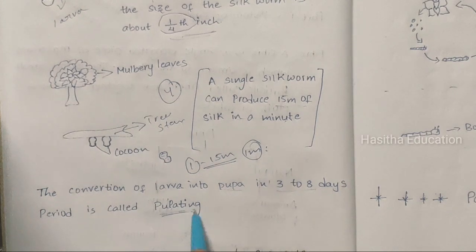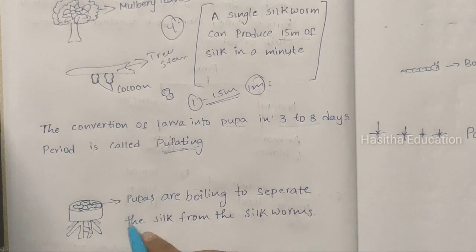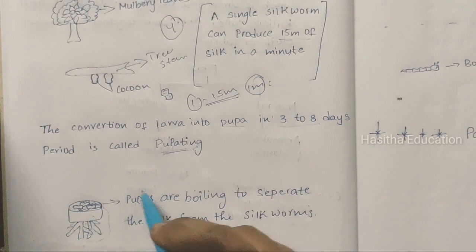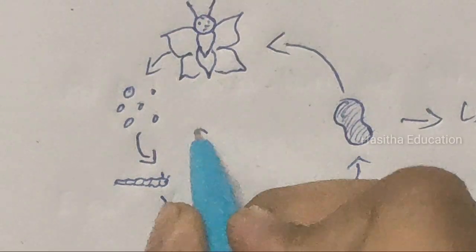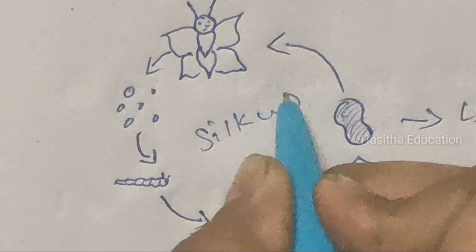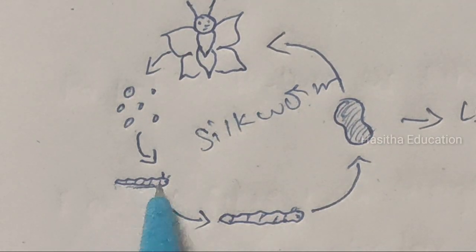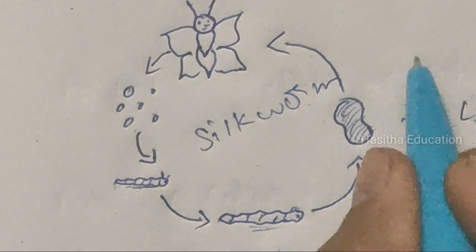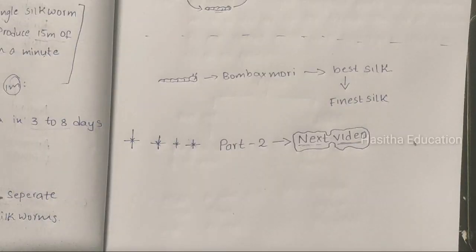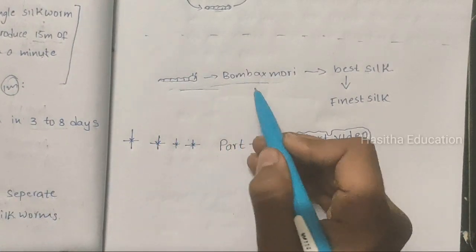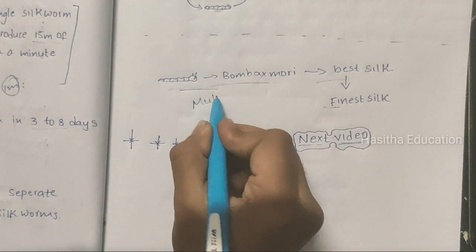Next, the cocoon is treated with hot air, steam, and boiling water to separate the silkworm from the fiber. Observe the diagram carefully — this shows the lifecycle of the silkworm. These are the tiny eggs; after coming from the egg, this is the larva, then the silk moth. Next is the process of pupating and the adult stage. Silk produced by Bombyx Mori is considered to be the best quality. Bombyx Mori feeds mainly on mulberry leaves.